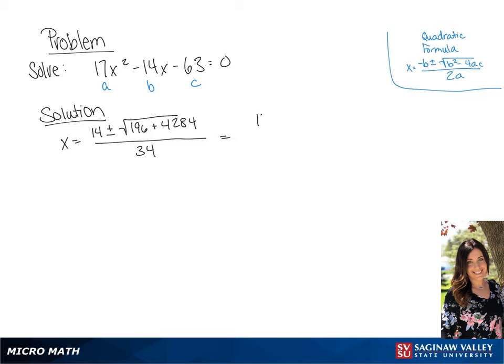If we simplify this, we are going to get 14 plus or minus the square root of 4,480 all over 34.